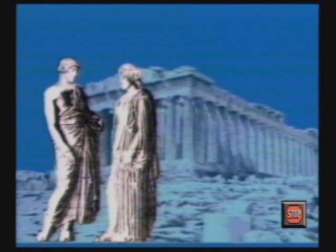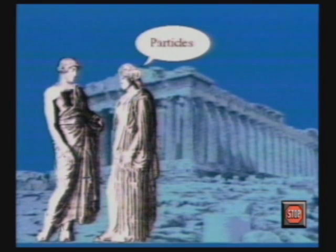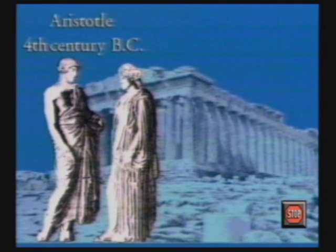Two thousand years ago, when the Greeks pondered the nature of matter, they came up with two different models. Democritus said that matter is made up of tiny indivisible particles called atoms. Aristotle said that matter is continuous.